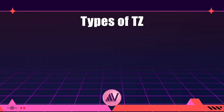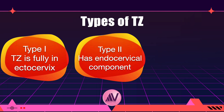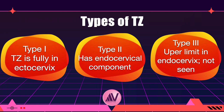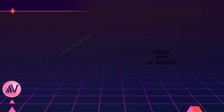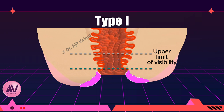There are three types of transformation zones. Type 1 is where the upper limit of visibility is on the ectocervix — that is, it is fully visualized during colposcopy examination. This schematic diagram illustrates a Type 1 transformation zone. The gray dotted line represents the upper limit of visibility; the green dotted line represents the upper limit of the transformation zone. The pink area on either side of the external os represents the transformation zone, and the entire transformation zone is on the ectocervix. This finding on colposcopy is considered normal or adequate colposcopy.